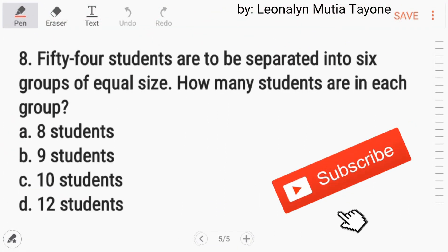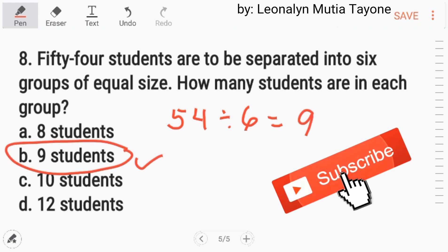Number 8. 54 students are to be separated into 6 groups of equal size. How many students are each group? 54 divided by 6. And the answer is 9. Letter B. Anyway, here you go.